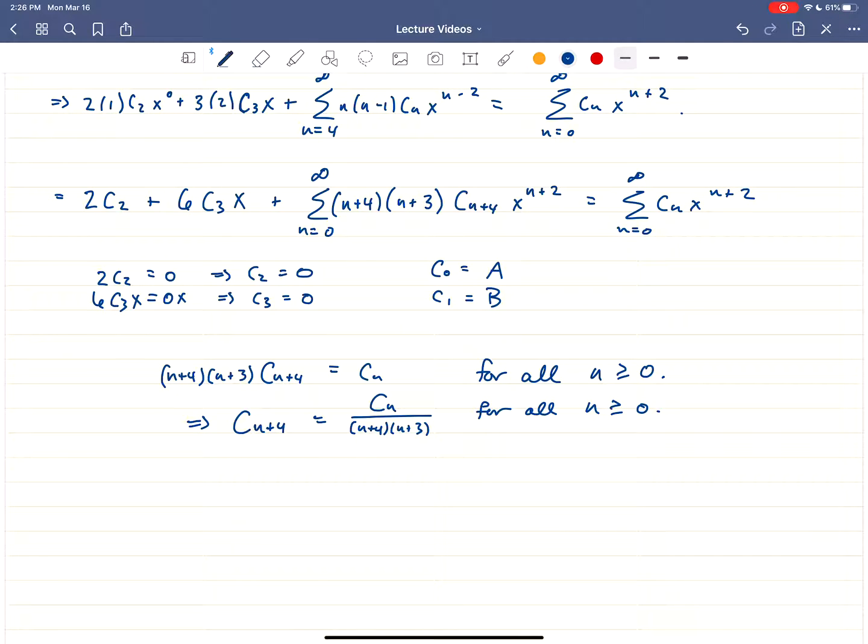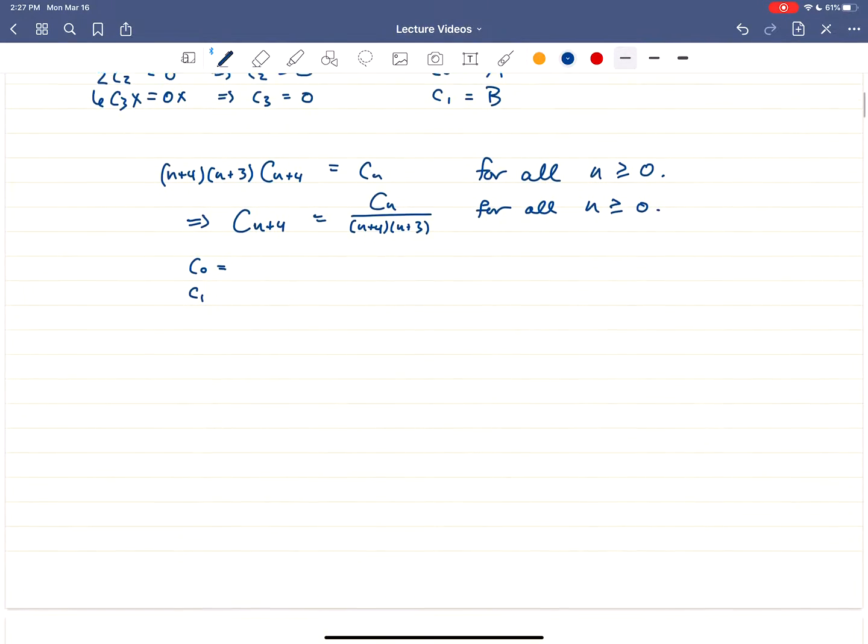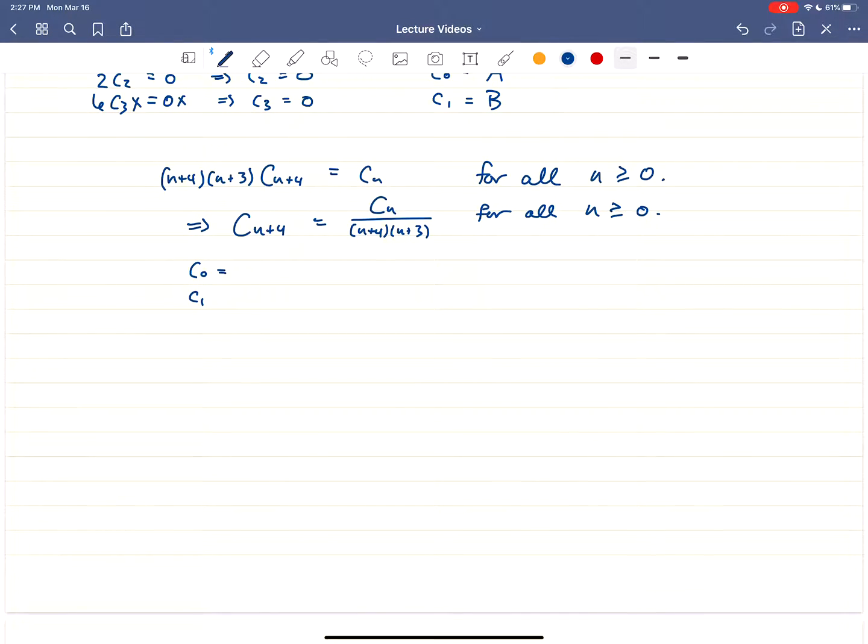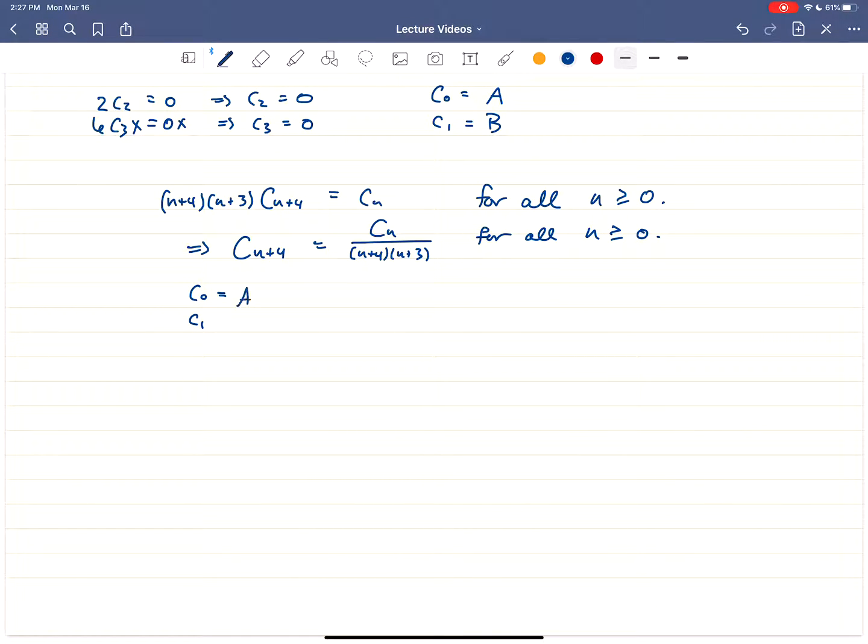And then we're just going to start to play with this recurrence. Let's find a bunch of values. Let's just find as many values as we can. And then we will go from there. So let's see. The first value, when we plug in n equals 0, we're going to get c₄. So I just always like to copy these down just to keep track. So c₀ is A.